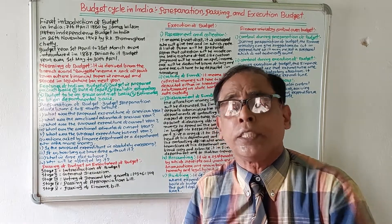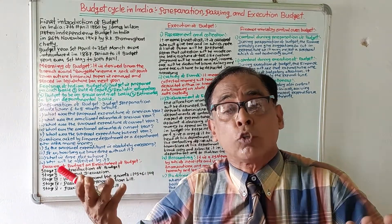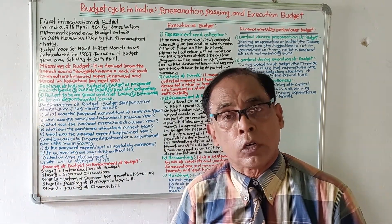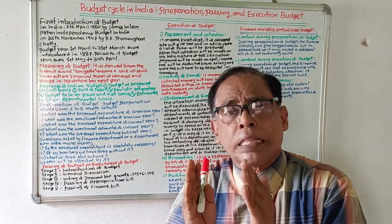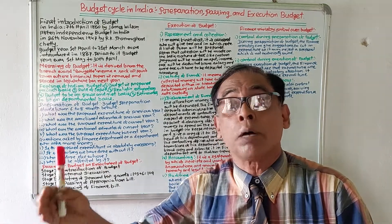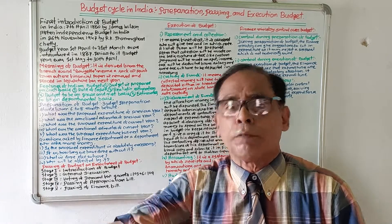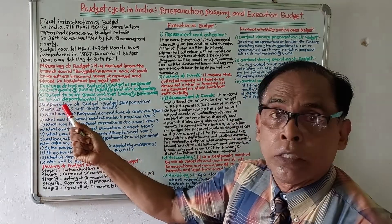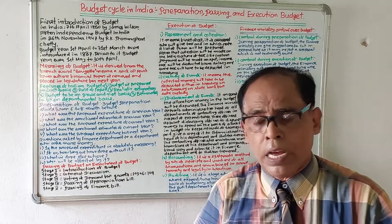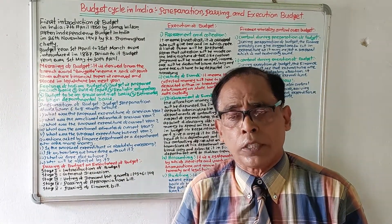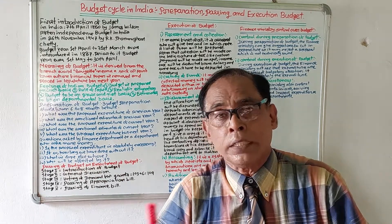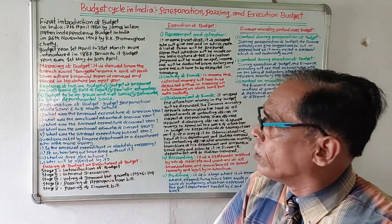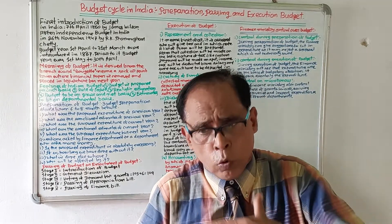Feature four: budget to be on gross and net basis. Gross basis means whatever demands are made by departments are mentioned in total. Net basis means that sometimes sanctions for a scheme are made on a net basis. Feature five: budget estimates to be on departmental basis — every department will give its own expenditure estimate. So these are the five features of the Indian budget.